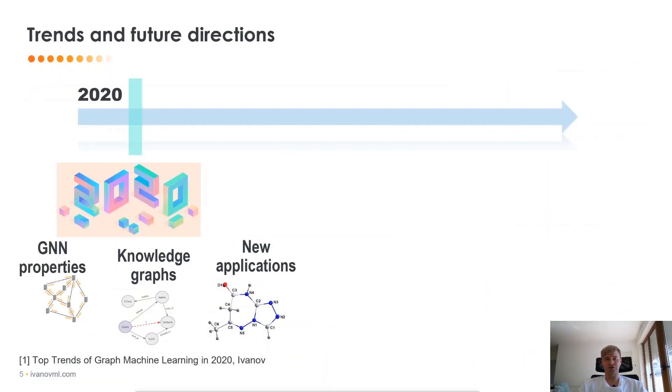Now, let's talk a little bit about trends and future directions of this field. In the beginning of this year, I wrote a blog post on top trends of graph machine learning for this year, and I outlined three different big topics that people currently work on.